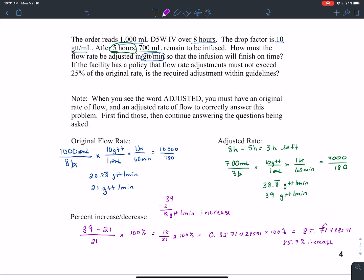If we look back up, they're telling us that the facility has a policy that flow rate adjustments must not exceed 25% of the original rate. Remember, that exceed means be higher than. So this is way too high. 85.7% is much higher than 25%. So we will say no, it is not within guidelines.